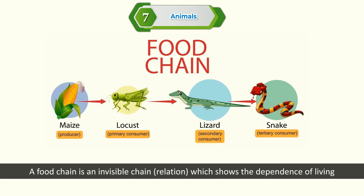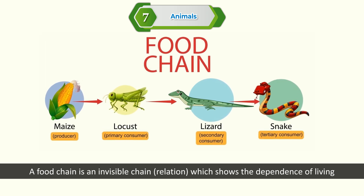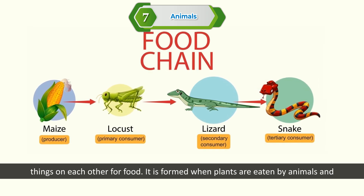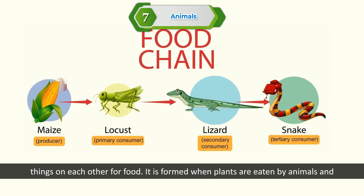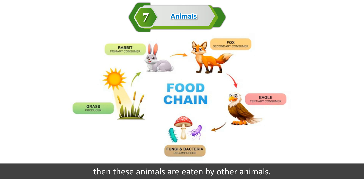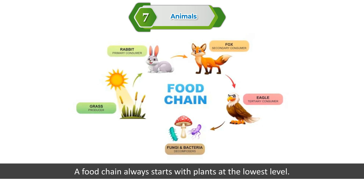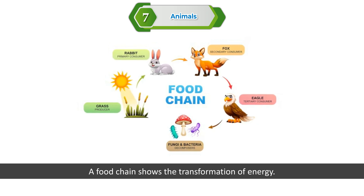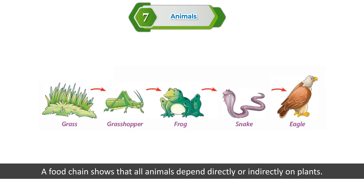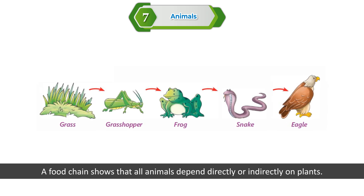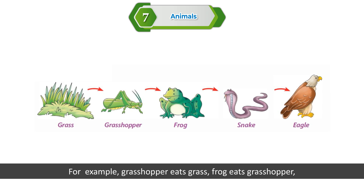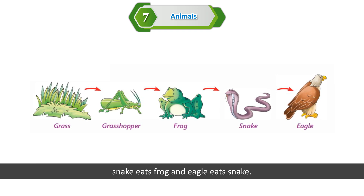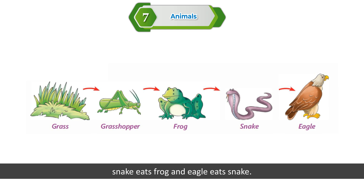Food chain. A food chain is an invisible chain or relation which shows the dependence of living things on each other for food. It is formed when plants are eaten by animals and those animals are eaten by other animals. A food chain always starts with plants at the lowest level and shows the transformation of energy. For example: grasshopper eats grass, frog eats grasshopper, snake eats frog, and eagle eats snake.